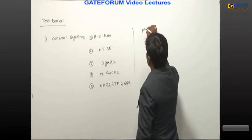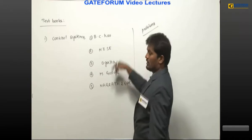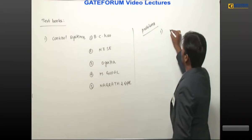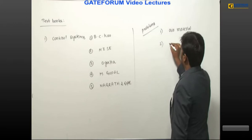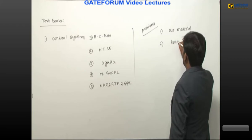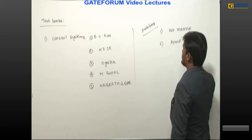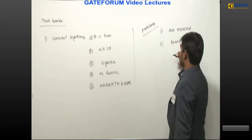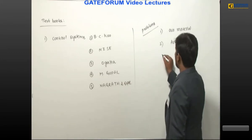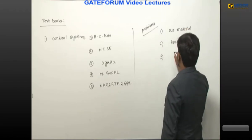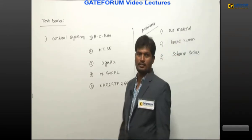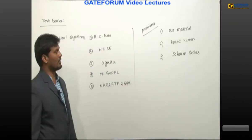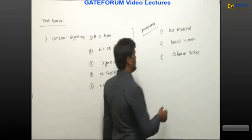For solving problems and practicing more, our own material is recommended. Also, Control Systems by Anand Kumar — it is a local standard book but problems are very good, with many practice problems. Third, Control Systems by Shyam series, where all subject questions are in depth and at various levels. As many questions as you practice, that much you will become perfect.